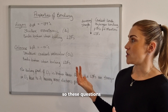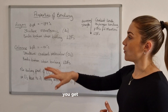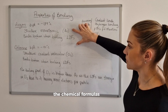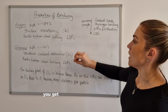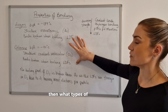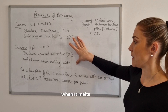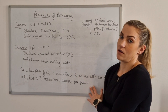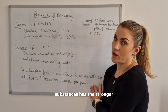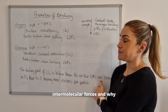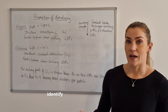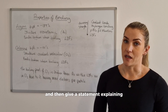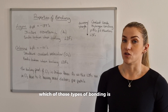These questions in the exam are generally worth three marks. You get one mark for stating the structures of both substances — ideally include the chemical formulas in that part of your answer. You get the second mark for identifying what types of intermolecular attractions are broken when it melts or boils, and then the third mark comes from stating which of the two substances has the stronger intermolecular forces and why. So: identify the structure, identify the type of bonding broken when melting or boiling, and give a statement explaining which bonding is stronger and why.